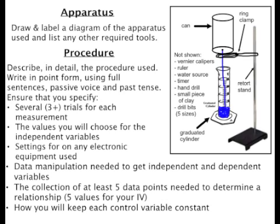In outlining the apparatus and procedure, the most important thing is that the person reading the lab understands precisely what you're planning to do and how you're planning to control the variables. A well-drawn diagram can be very helpful in making your explanation clear. Make sure that your procedure includes at least three trials where you repeat the same measurement with the same independent variable multiple times. The number of trials should be chosen based on how much uncertainty you expect in the measurements. Reasonable values of the independent variables must also be included, and you should have at least five of these values.